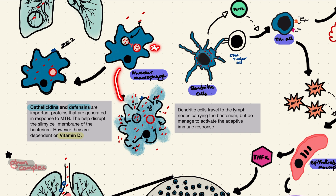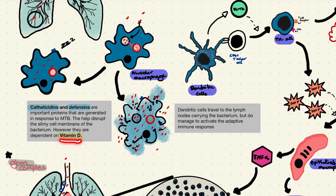Infected macrophages may clear the infection, be overrun by the bacterium and die, or the bacterium may lay dormant undetected inside the macrophage. Various factors play a role in the macrophage's ability to eliminate the bacterium, but arguably the most important is vitamin D. Vitamin D is necessary for the production of cathelicidins and defensins — proteins that help disrupt the cell membrane of Mycobacterium tuberculosis. So make sure you get enough sunlight!